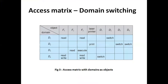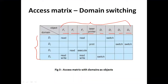We have learned about domain switching — there are times where a process will have to switch from one domain to another. This domain switching can also be represented using an access matrix. Along with the resources f1, f2, f3, and the printer, the other domains are also represented as objects of the matrix. This matrix where domains are also represented as objects is required to represent domain switching.